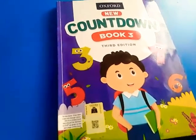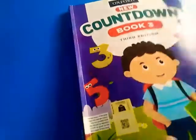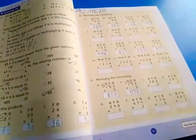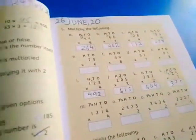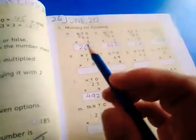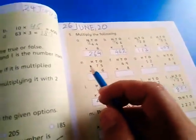Open your countdown. Hold your pencils. Page number 77. Write down the date on the top. Today we will do some more multiplications.